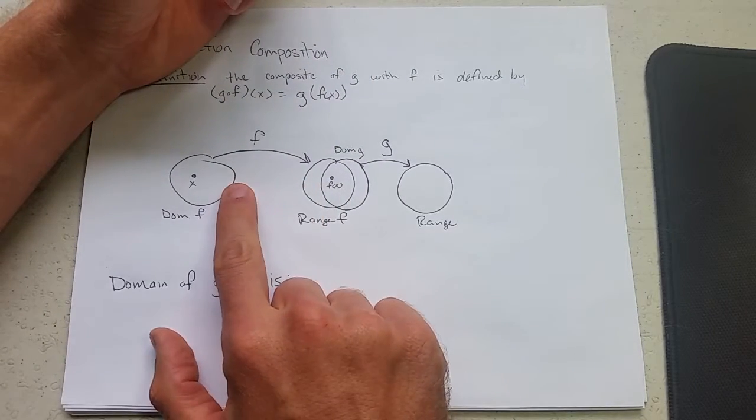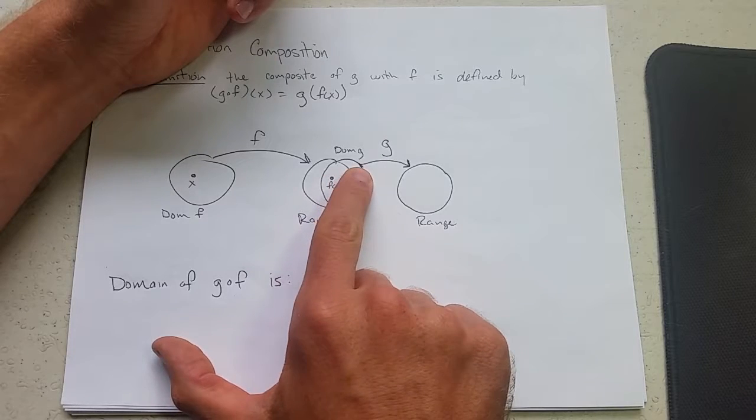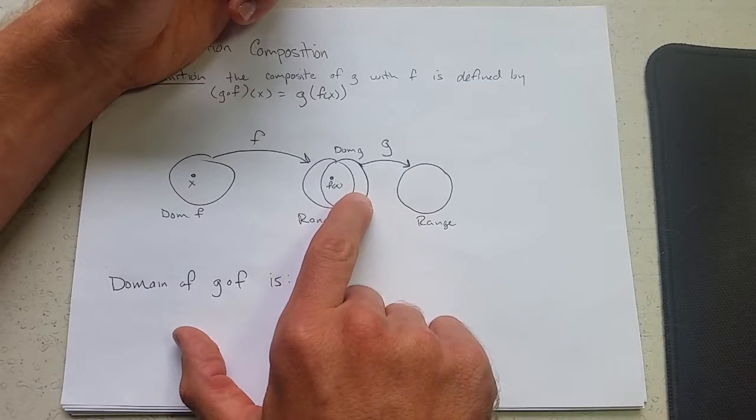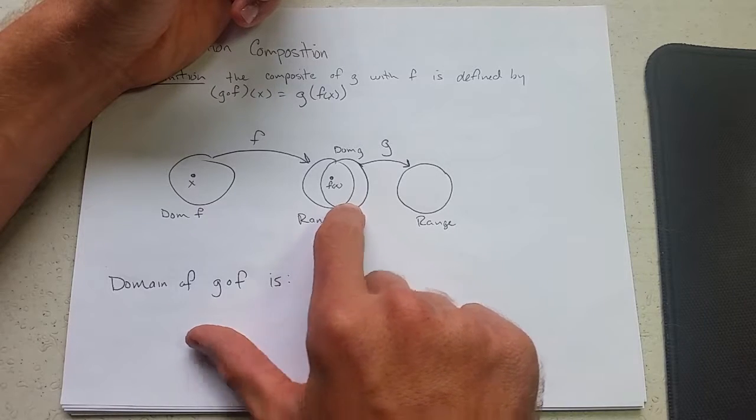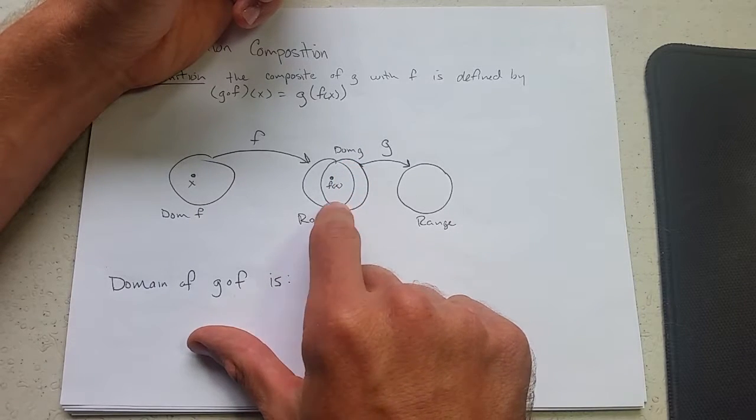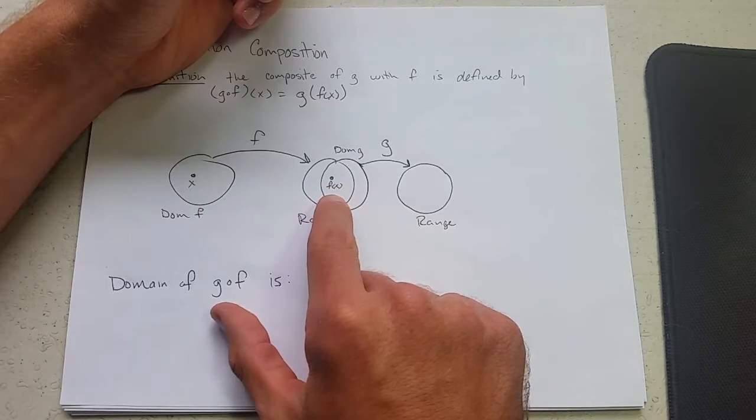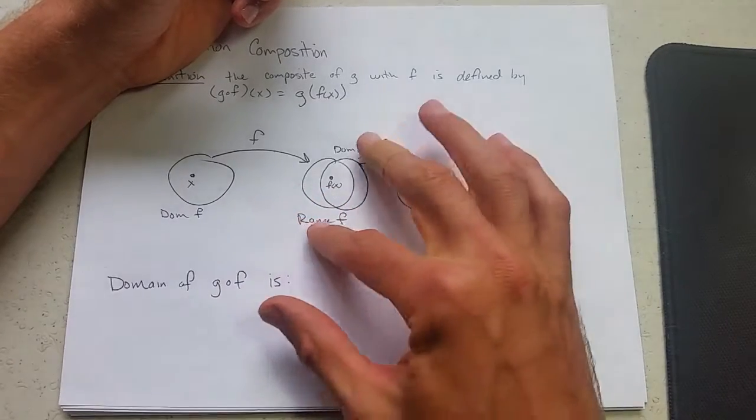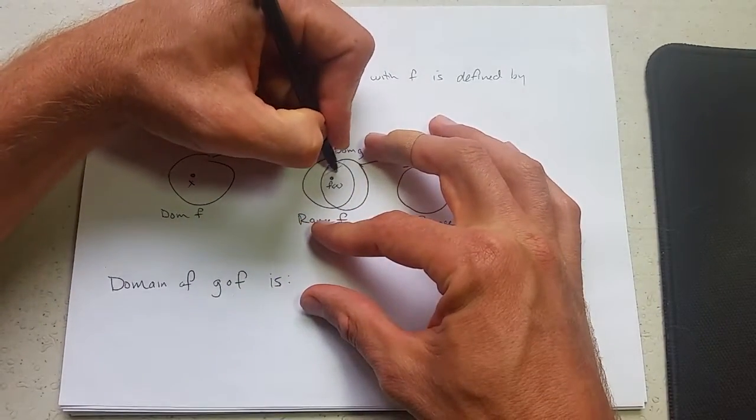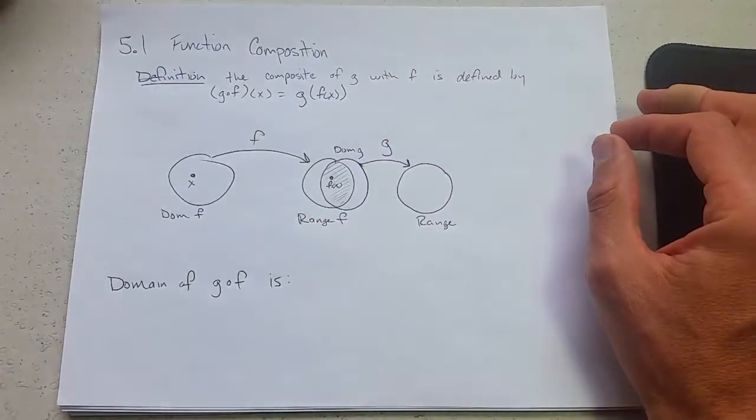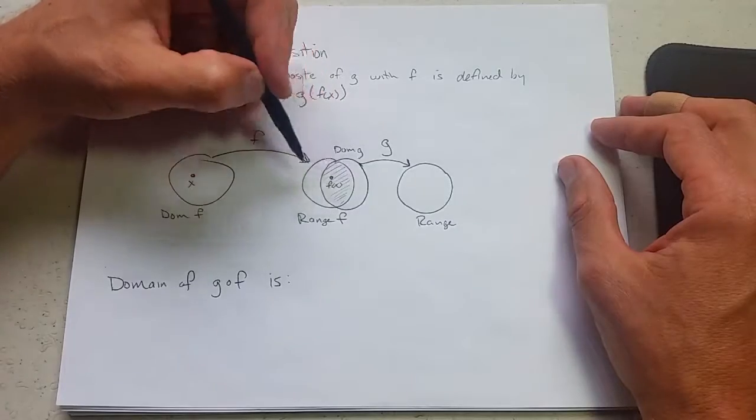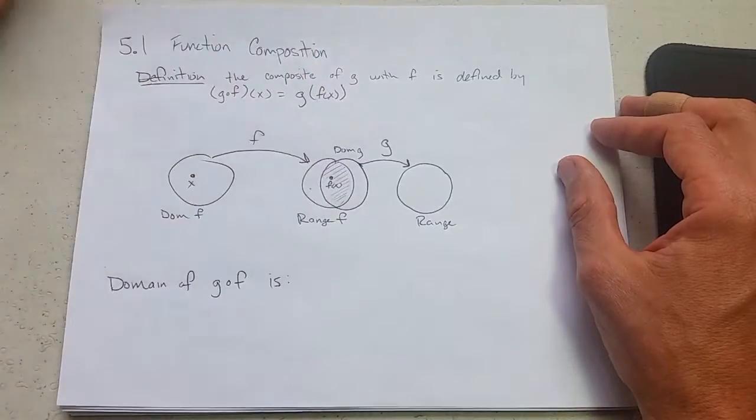Now f, the range of f may not equal the domain of g. The domain of g may be bigger than the range of f, so there may be things out here that g could eat, but f won't serve them. So there's a range of f, domain of g. What we're actually going to look at is what's in common or the intersection right there. So this is going to be the intersection of the range of f, the domain of g.